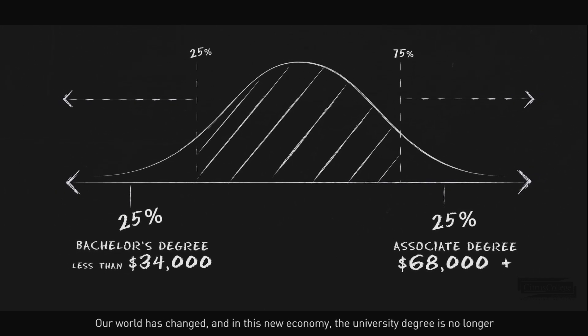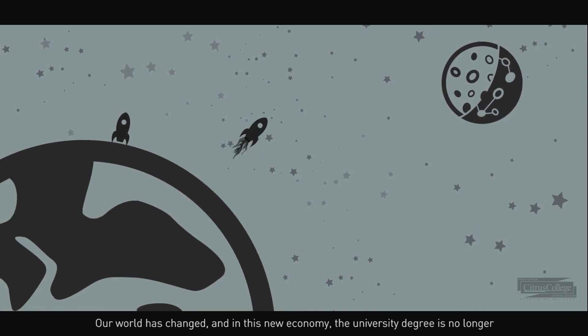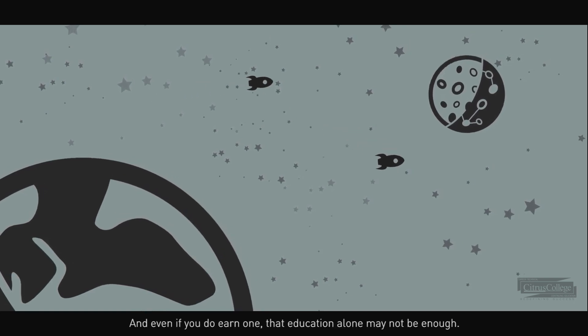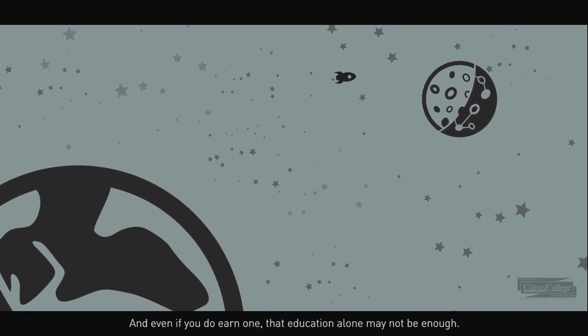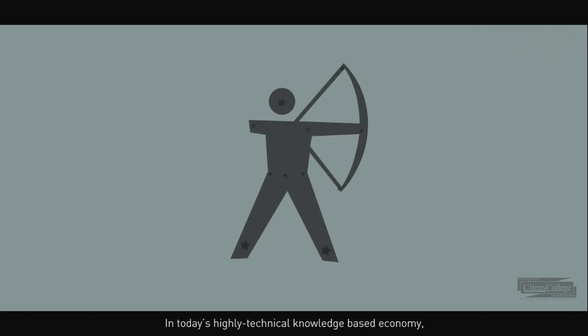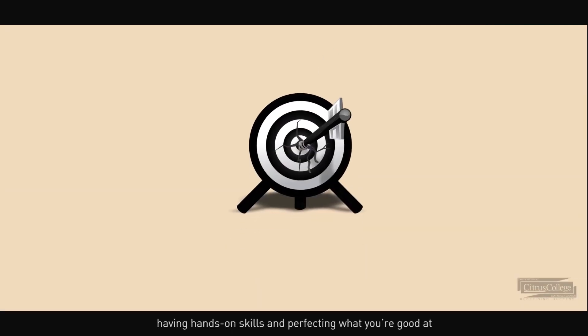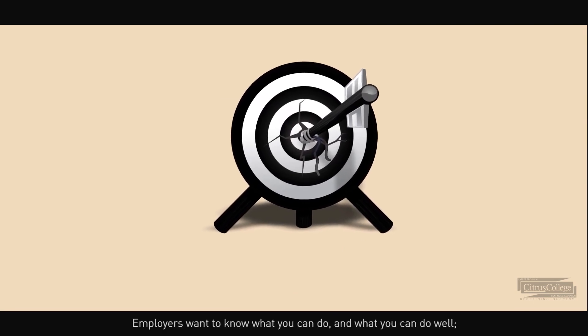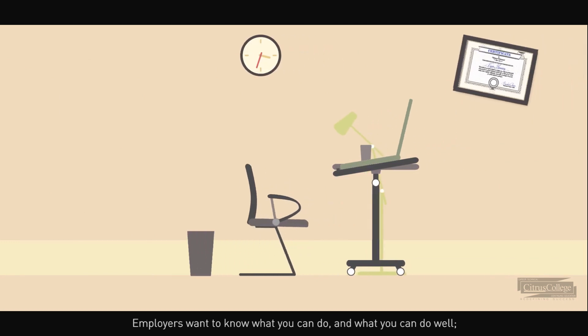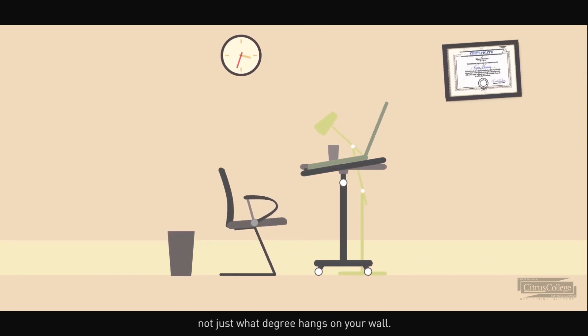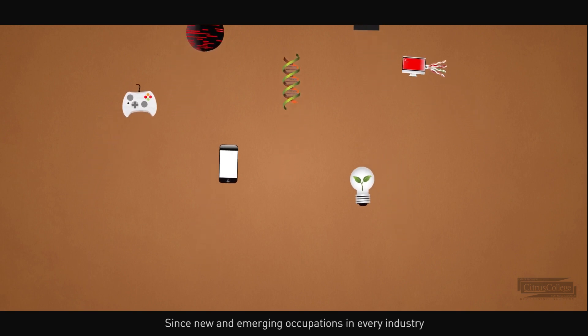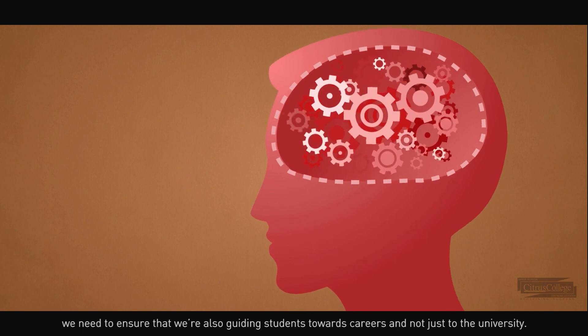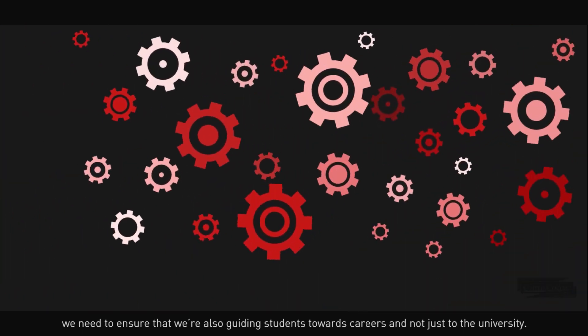Our world has changed, and in this new economy, the university degree is no longer the guaranteed path towards financial success as it was for previous generations. And even if you do earn one, that education alone may not be enough. In today's highly technical, knowledge-based economy, having hands-on skills and perfecting what you're good at can be more valuable than getting a degree in something simply to get one. Employers want to know what you can do and what you can do well, not just what degree hangs on your wall. Since new and emerging occupations in every industry now require a combination of academic knowledge and technical ability, we need to ensure that we're also guiding students towards careers and not just to the university.